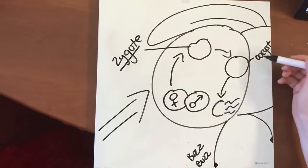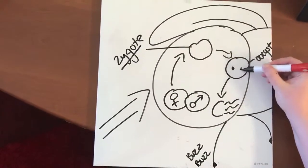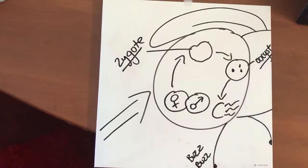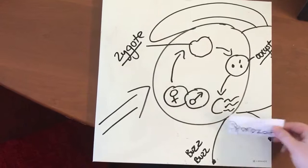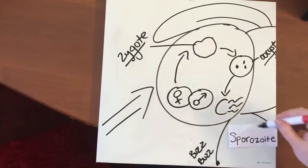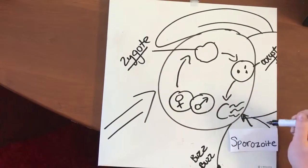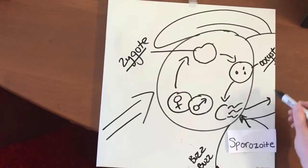The zygote further develops into an oocyst and undergoes fertilization within the infected mosquito, eventually rupturing and releasing many sporozoites, which travel to the mosquito's saliva.